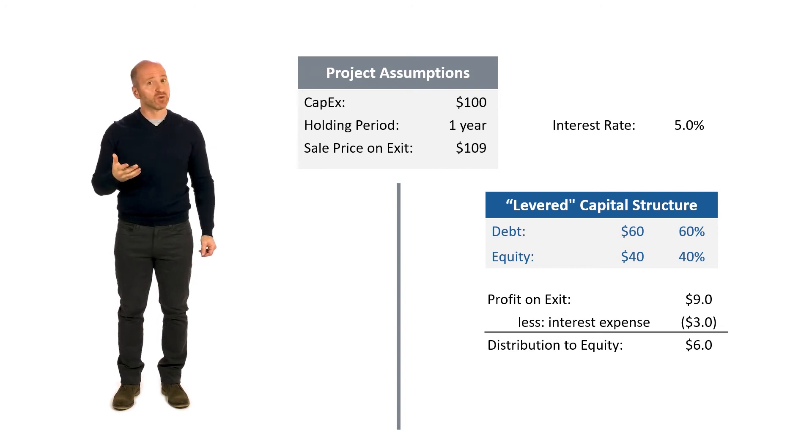We got $9 in profit on exit less $3 of interest expense gives us $6 that's available to be distributed to equity. So what's our return to equity? It's the $6 that can be distributed divided by the amount of equity that was invested, $40. 6 divided by 40 is a 15% return on equity.